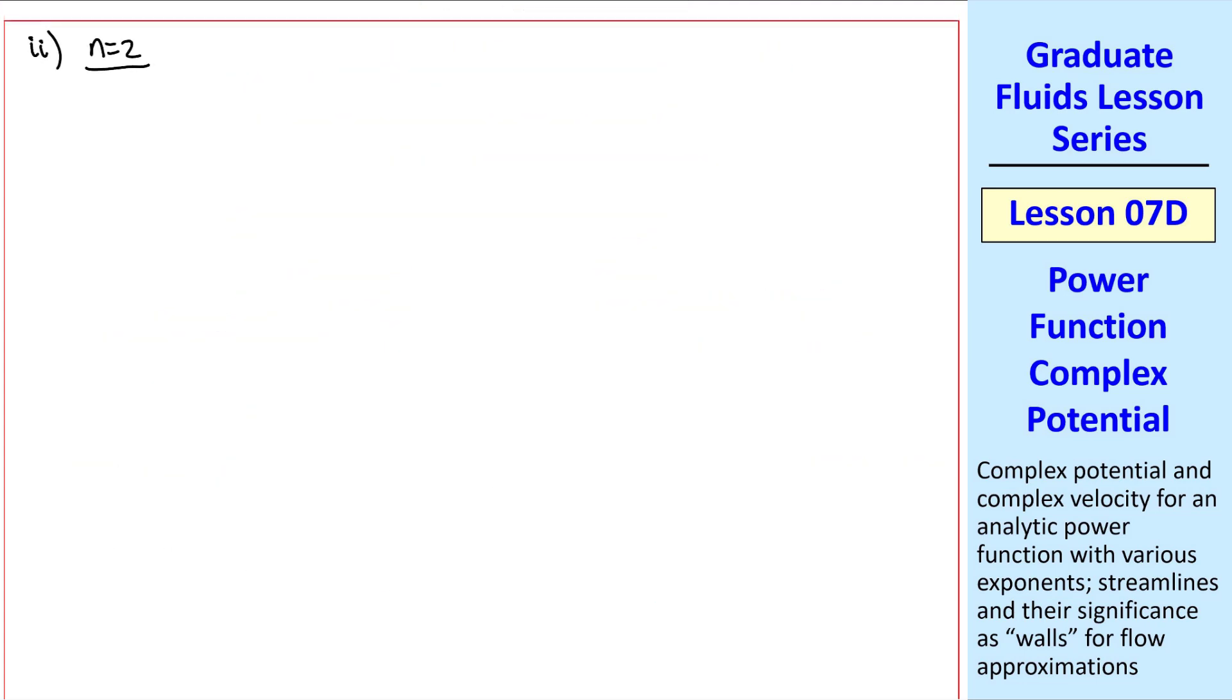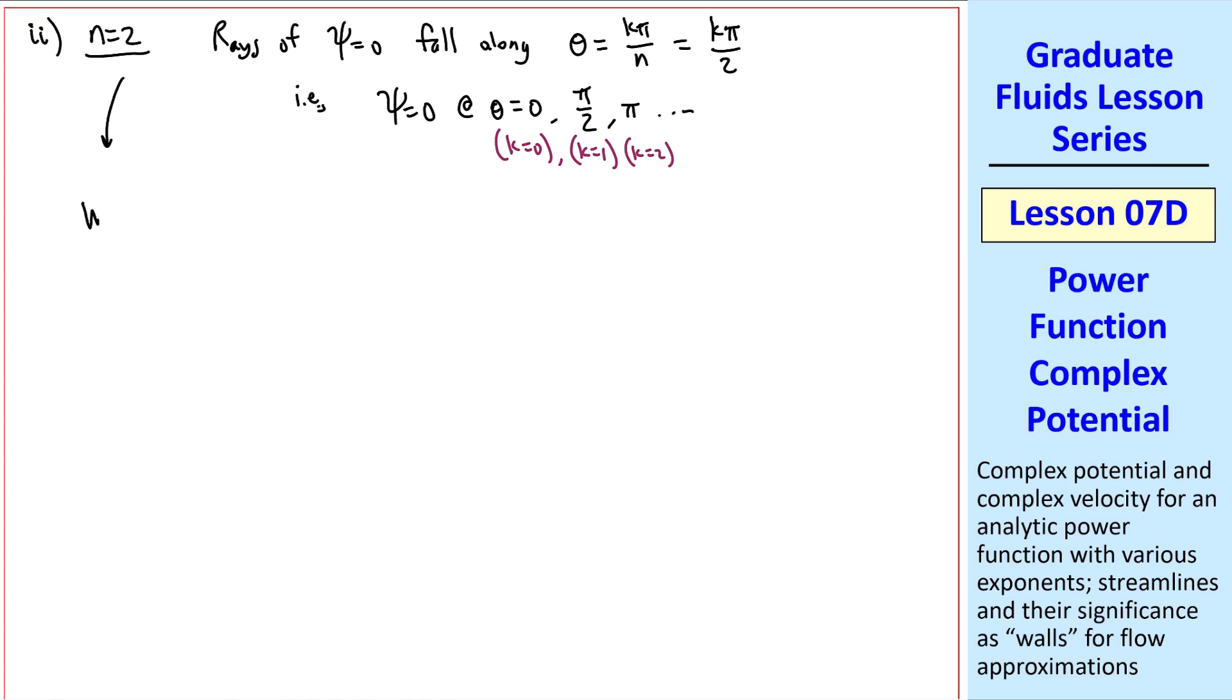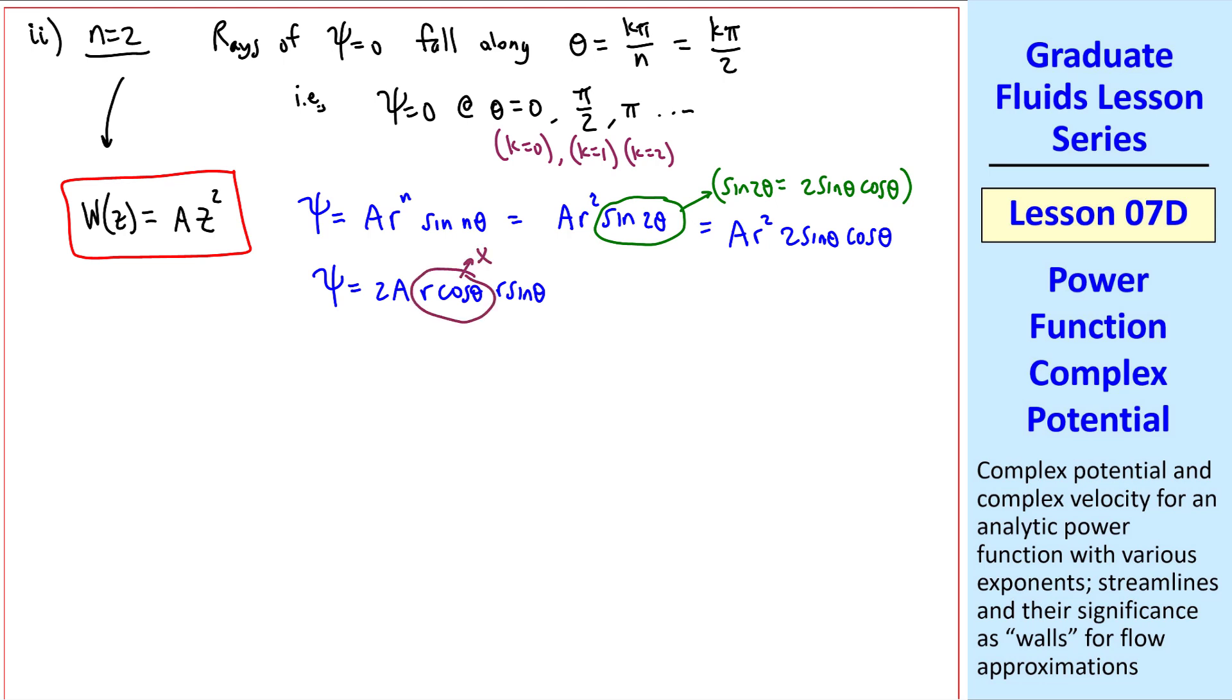Now let's look at n equal 2. Again, rays of psi equal 0 fall along rays where theta is k pi over n, which is k pi over 2 here, i.e. psi equals 0 at theta equals 0 when k equals 0, pi over 2 when k equals 1, pi when k equals 2, etc. For this flow, our complex potential is a z to the 2 power, or z squared, and psi here becomes a r squared sine 2 theta. But you may recall that sine 2 theta is 2 sine theta cosine theta. So psi equal a r squared 2 sine theta cosine theta, which we'll write as psi equal 2a r cosine theta r sine theta. But we know that r cosine theta is x, and r sine theta is y. So psi is 2a x y.